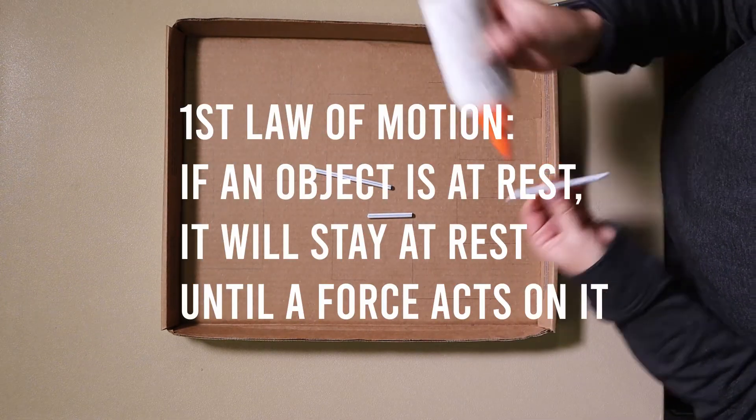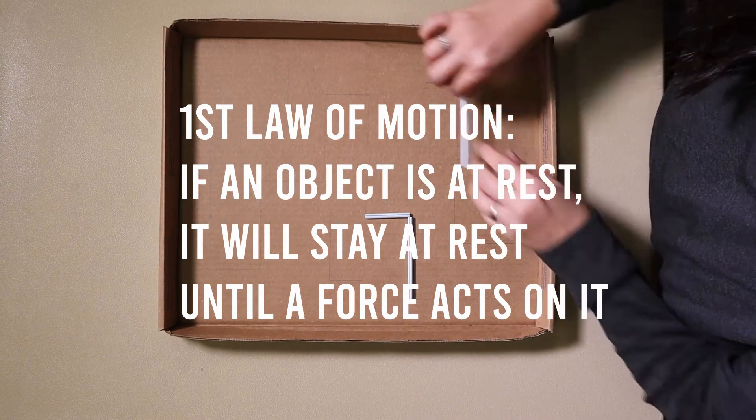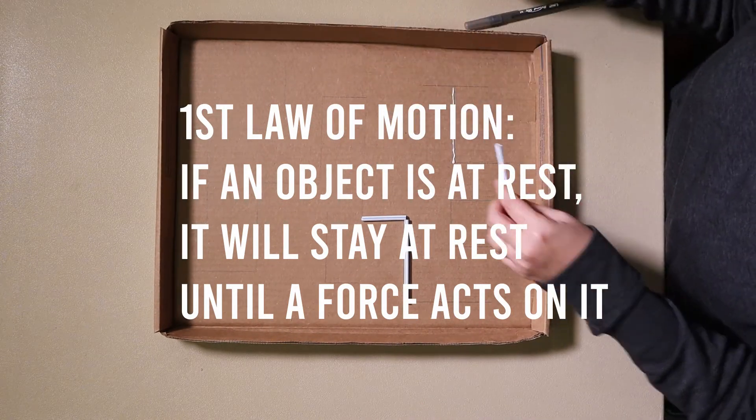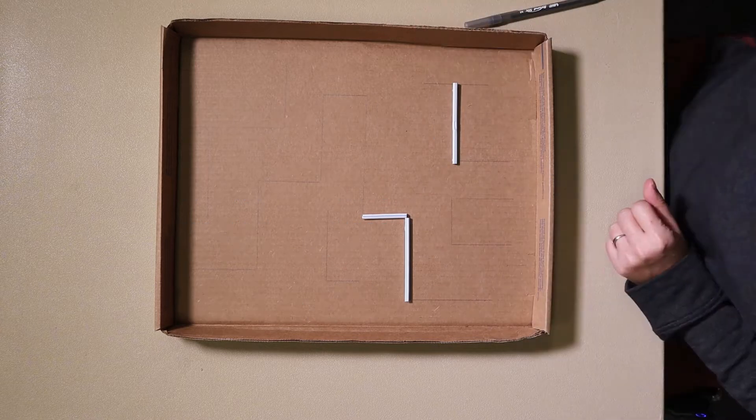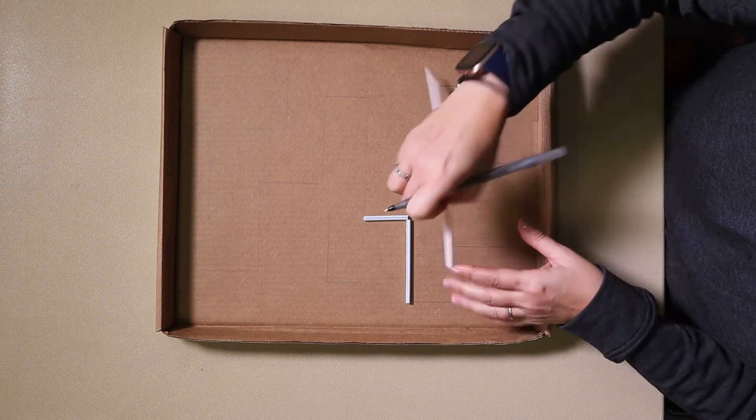Newton's first law of motion says that if an object is at rest, it will stay at rest unless a force acts on it. If an object is moving, it will keep moving unless a force stops it. The first law is also called the law of inertia.